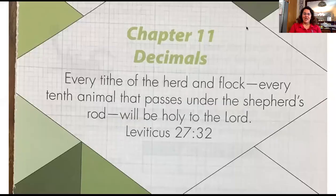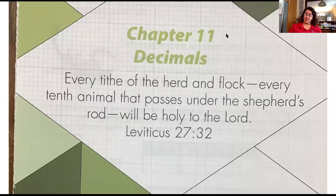Here we are friends. We are on chapter 11, Decimals. In Leviticus 27:32 we read: 'Every tithe of the herd and flock, every tenth animal that passes under the shepherd's rod, will be holy to the Lord.' Therefore, boys and girls, in this verse the word tithe is used to indicate a tenth.